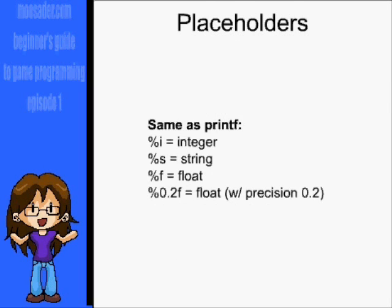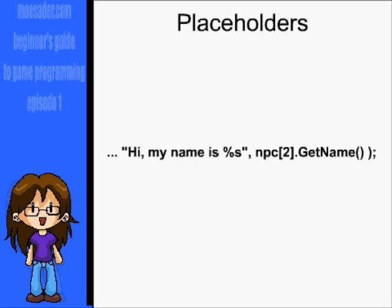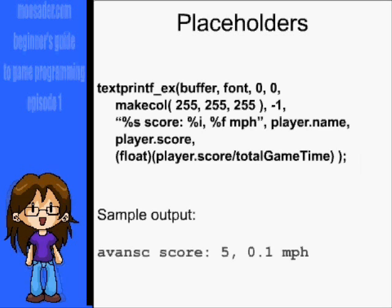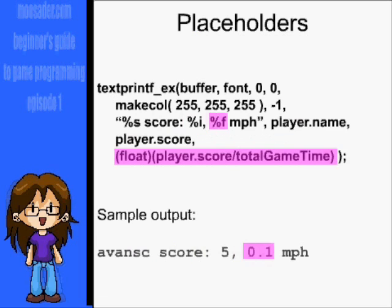Placeholders are just like in the printf functions, where you have a %f, %i, or %s for a placeholder. After the string parameter, add in any variables that belong in those placeholders. For example, you could display something like this to show the player's name, score, and speed.